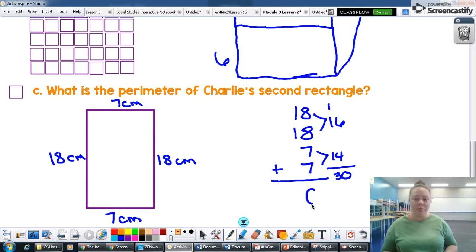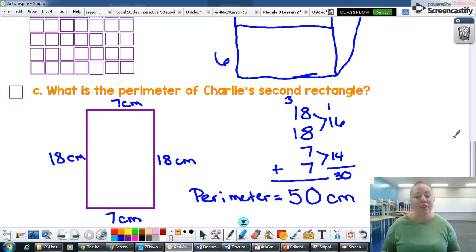So in my actual problem, I'm putting down my zero and I'm regrouping this three into the tens place. And I have three plus two, one plus one. So that is five. So the perimeter is 50 centimeters. So I will write that out. There we go. So the perimeter of his second rectangle is 50 centimeters.